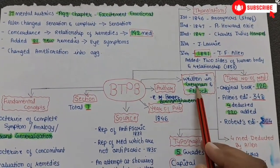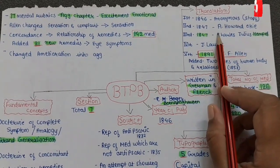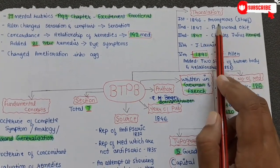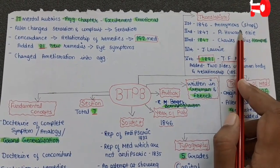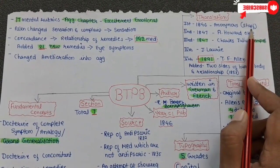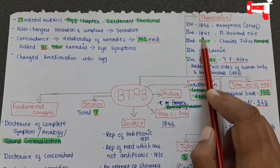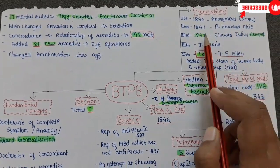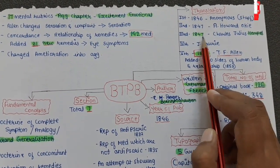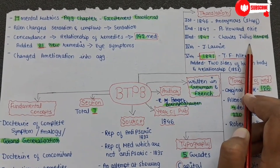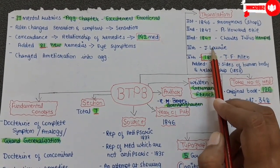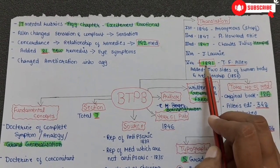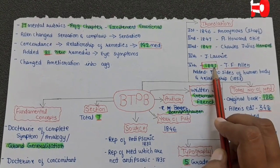Regarding translation: since it was written in German and French, the first translation was in 1846 itself, but the author is unknown — it is anonymous, though some say it was translated by Stapf. The second translation in 1847 was by A. Howard Okie. The third translation, also in 1847, was by C.J. Hempel — Charles Julius Hempel.